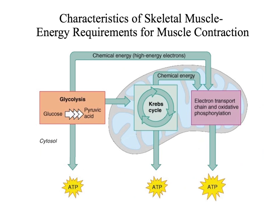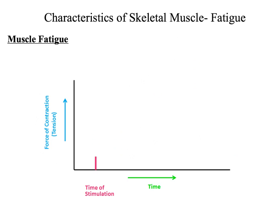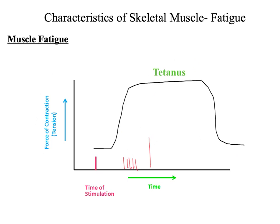For a muscle contraction to occur, it requires energy. Energy comes from a process called cellular respiration — the breakdown of a glucose molecule into ATP. ATP is the energy source for a muscle contraction. Although ATP is the energy source, our body does not store ATP; instead, we store something called creatine phosphate, which can be readily broken down to help produce ATP. During a muscle contraction, whether by increasing frequency or strength of stimulus, at some point the muscle will reach its maximum strength for contraction. We call this tetanus — the maximum force of a sustained contraction with no relaxation period.